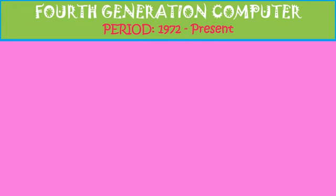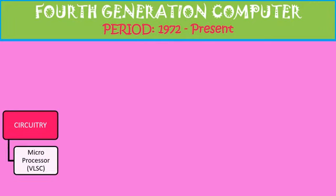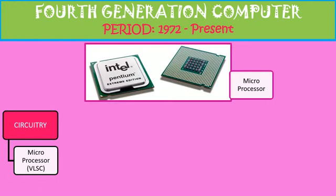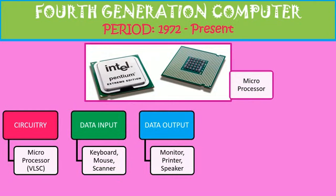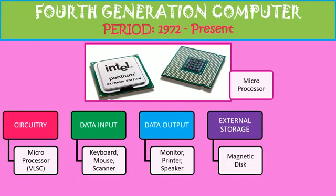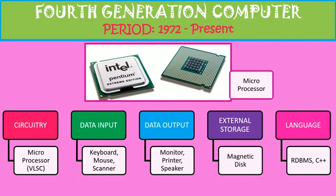Now we come to the 4th generation computers, which are the computers we are using today. The circuitry used is microprocessors — you can see the picture, such as Intel Pentium. Data input is given through keyboard, mouse, and scanner. Data output is through monitor, printer, and speaker. External storage is the magnetic disk, the hard disk we are using today. The languages used are C++ and RDBMS. RDBMS is used for database storage — a huge amount of database can be stored with the help of RDBMS.